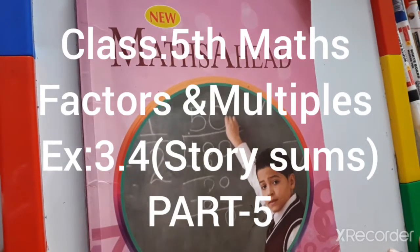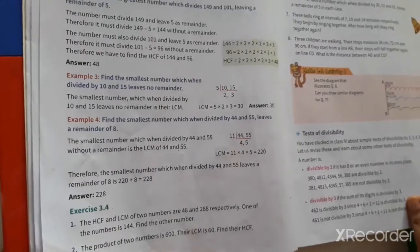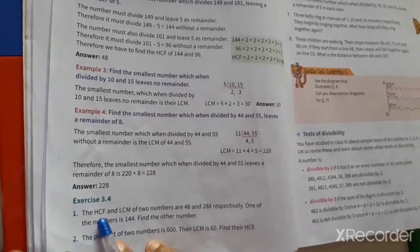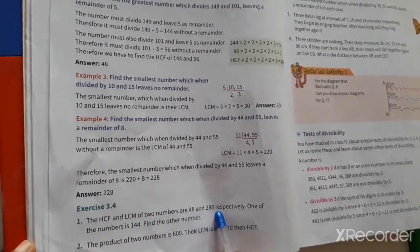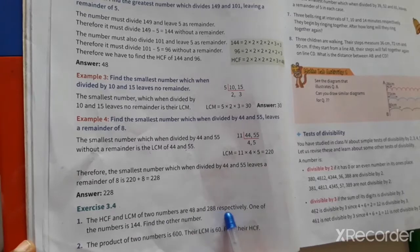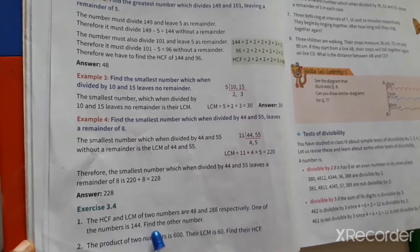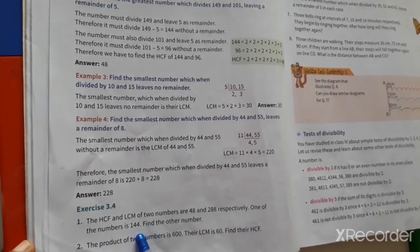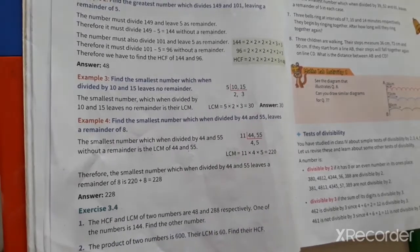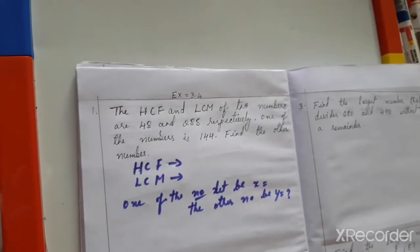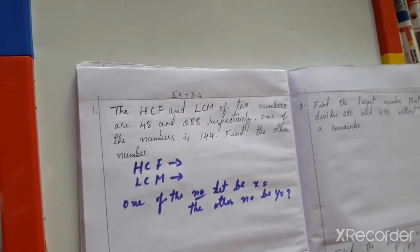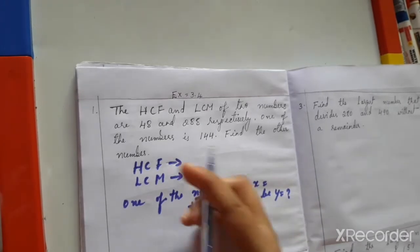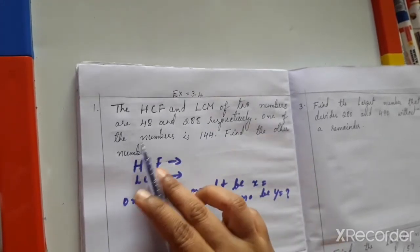This is fifth standard math. Chapter name is Factors and Multiples, Exercise 3.4. The HCF and LCM of two numbers are 48 and 288 respectively. One of the numbers is 144. Find the other number. Here in this question, the given information is: HCF and LCM of numbers are 48 and 288 respectively.